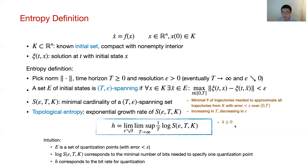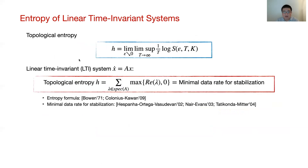Topological entropy is clearly non-negative by definition. In this talk, some of our entropy bounds can yield negative values — in these cases, the actual bounds are the maximum of the formula and zero. For linear time-invariant systems, there is an explicit formula for topological entropy: the sum of the positive real parts of eigenvalues, including repeated ones. It turns out this is also the formula for the minimum data rate needed for feedback stabilization. This equivalence further illustrates the connection between topological entropy and data rate requirements for control, motivating us to study topological entropy for more complex systems.